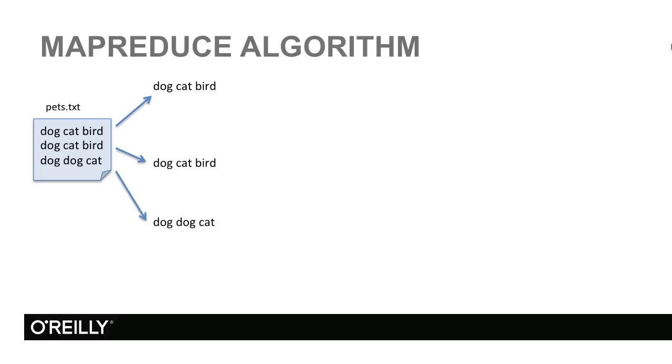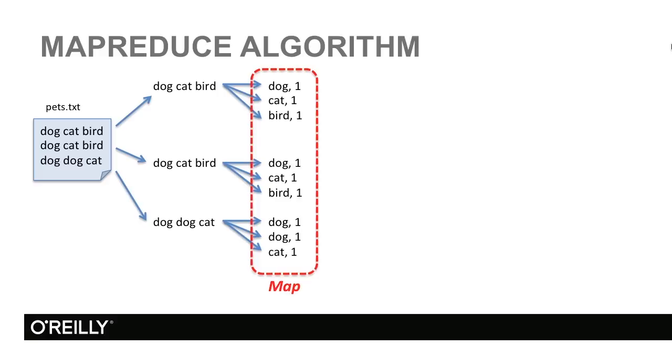Next, we are going to map these lines and extract the dog, cat, bird, and generate pairs: dog and number one, cat number one, and so on. We do that for every pet we find in the file. This is a very primitive function where whenever we encounter a pet, we emit a pair with the pet kind and the number one.